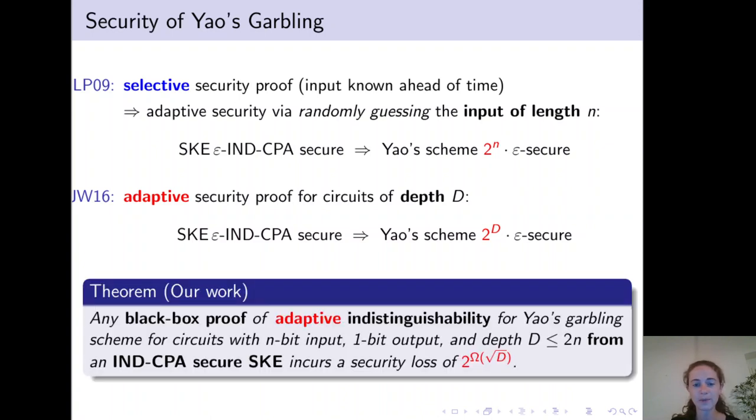we proved that for any black-box proof of adaptive indistinguishability for Yao's garbling scheme, for circuits with n-bit input, 1-bit output and depth d less than or equal to 2n, from an IND-CPA secure secret key encryption scheme, incurs a security loss that is exponential in square root of d.